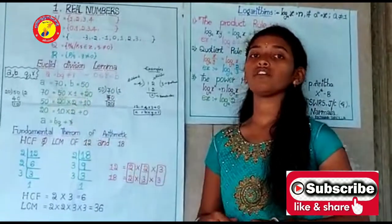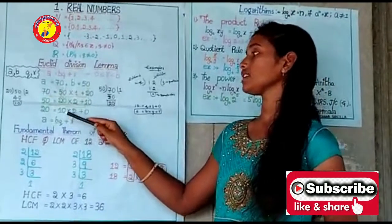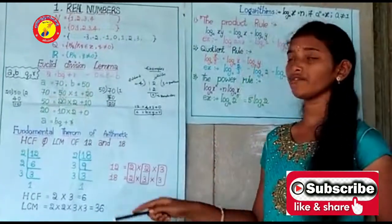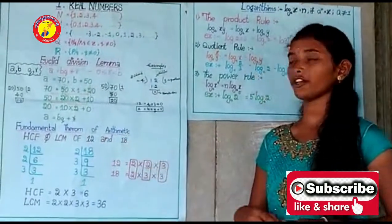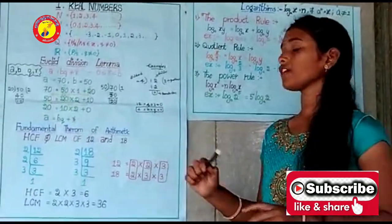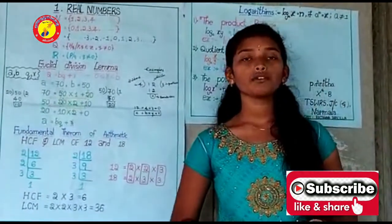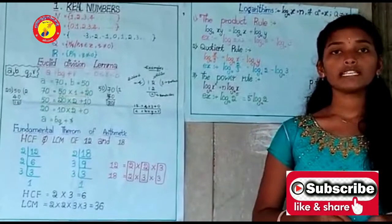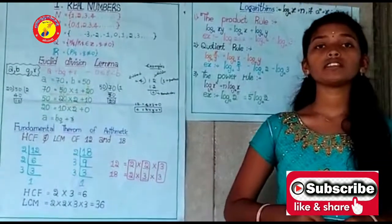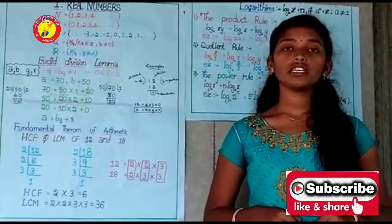Let me discuss the fundamental theorem of arithmetic. This theorem states that every composite number can be expressed as a product of prime numbers, and this factorization is unique.